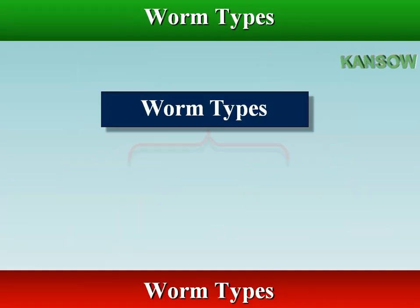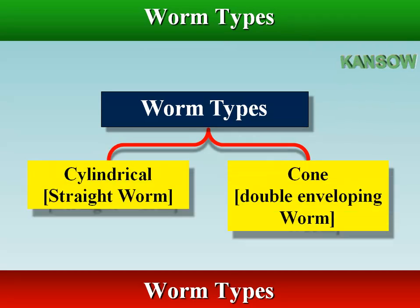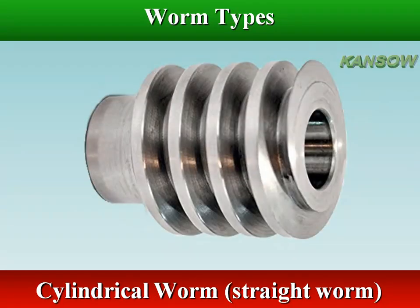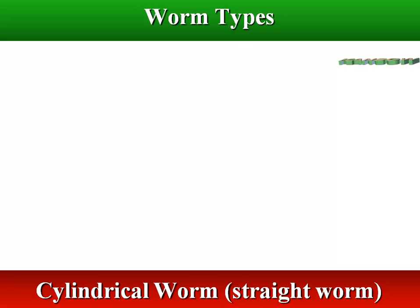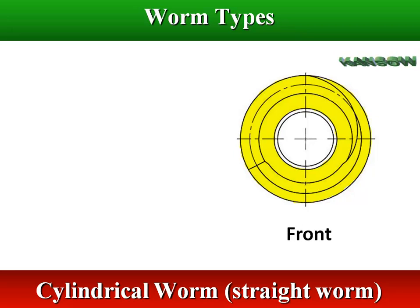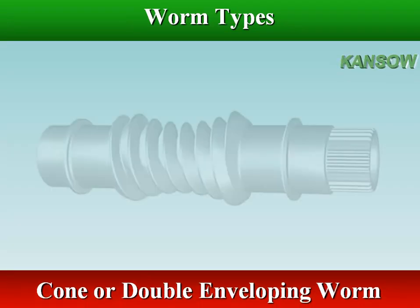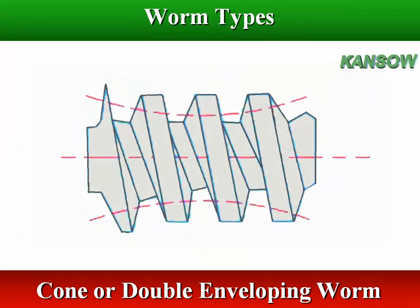There are two types of worms: cylindrical or straight worm, and cone or double-enveloping worm. The cylindrical or straight worm is most commonly used, with thread shape as an involute helicoid of pressure angle 14.5 degrees for single and double-threaded worms. The cone or double-enveloping worm is used to some extent but requires extremely accurate alignment.